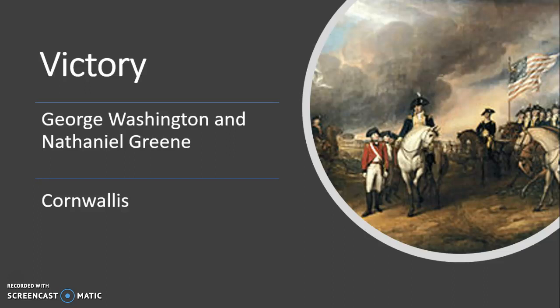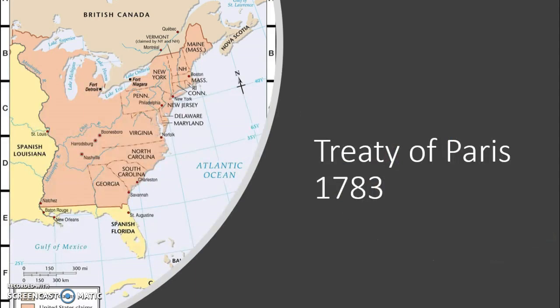The colonists emerged victorious as England was ready to start compromising. The treaty that ended the American Revolution is the Treaty of Paris 1783. Negotiations took multiple years, but the treaty was finally signed between Great Britain and America, officially ending the Revolution. One key stipulation was that Great Britain formally recognized American independence.